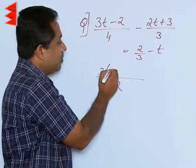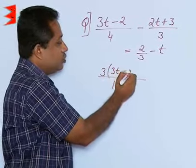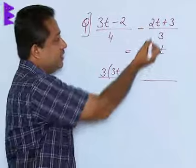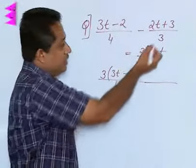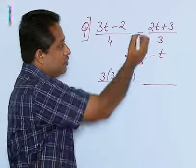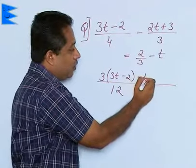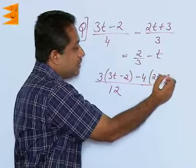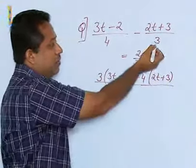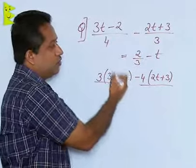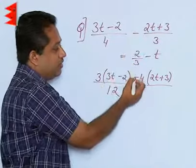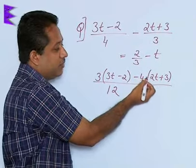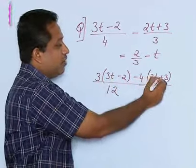Now comes the important step - that is this negative. 3 goes 4 times in 12, so this is going to be minus 4 multiplied by 2t plus 3. Again, I am repeating this step: 3 goes 4 times, so please do not change the sign. The sign will be written along with this number minus 4. What happens now? This can be solved.